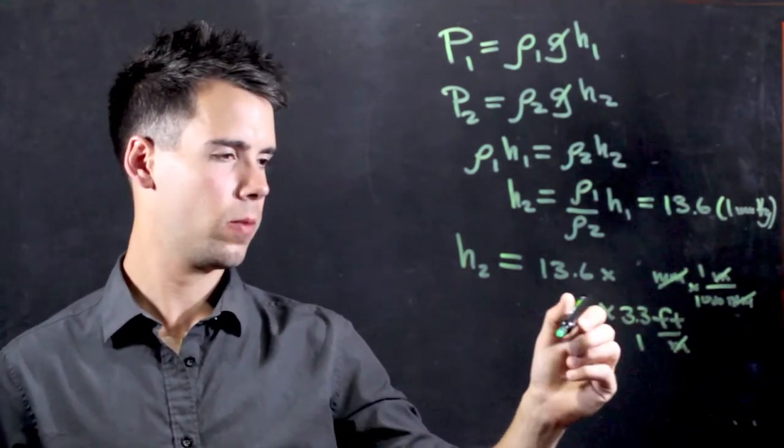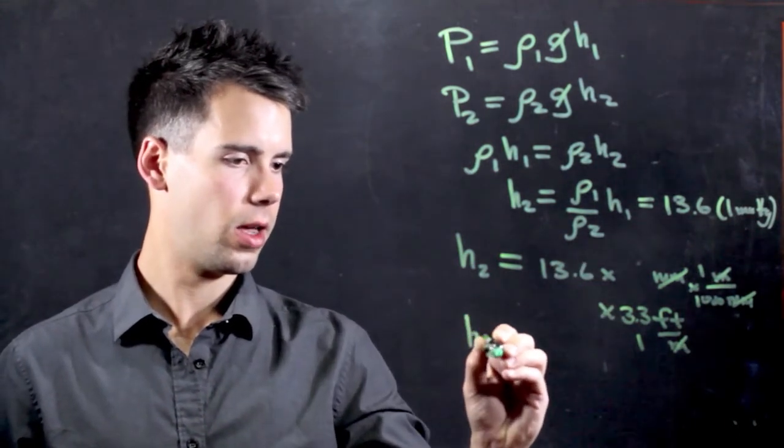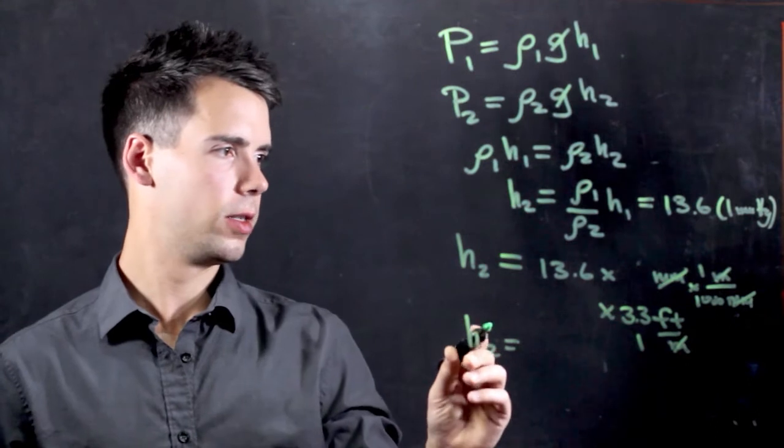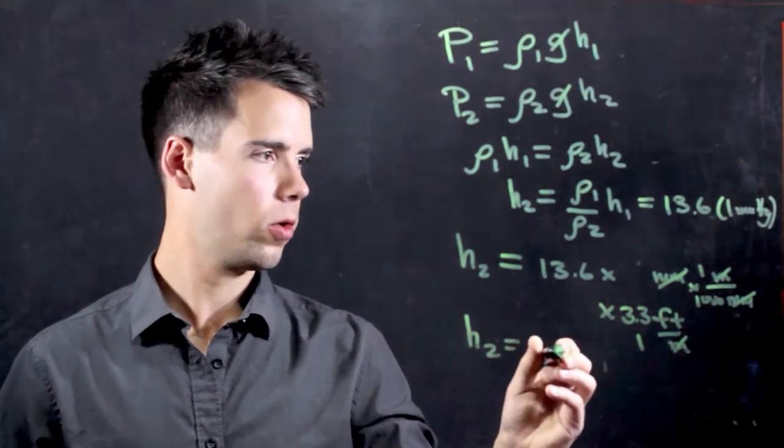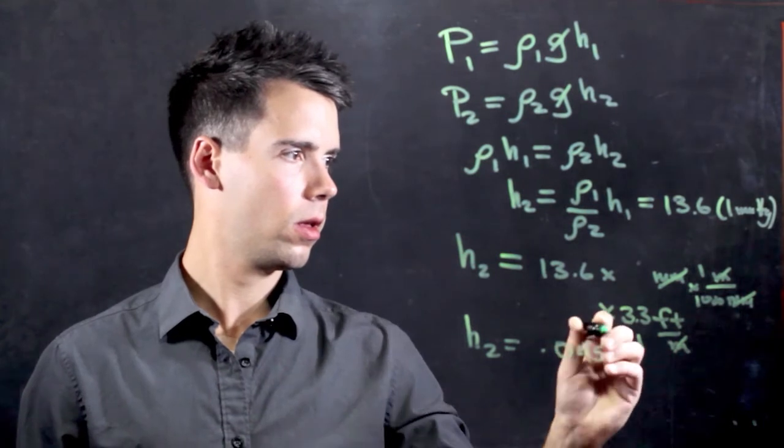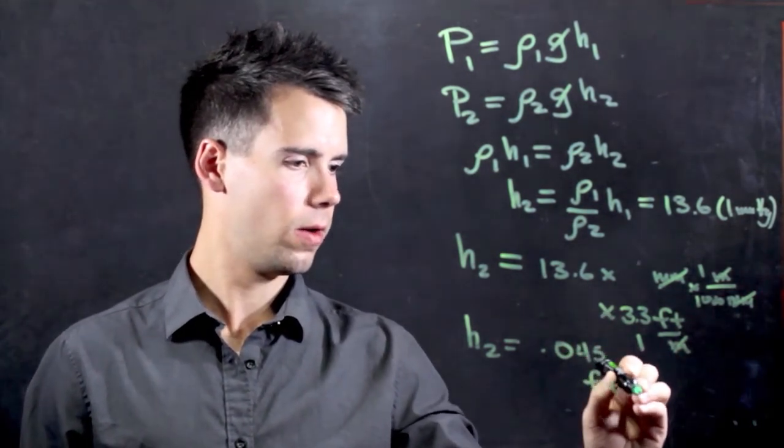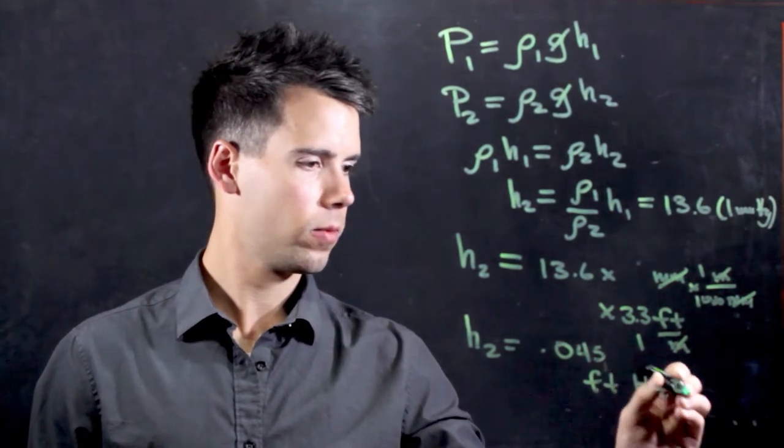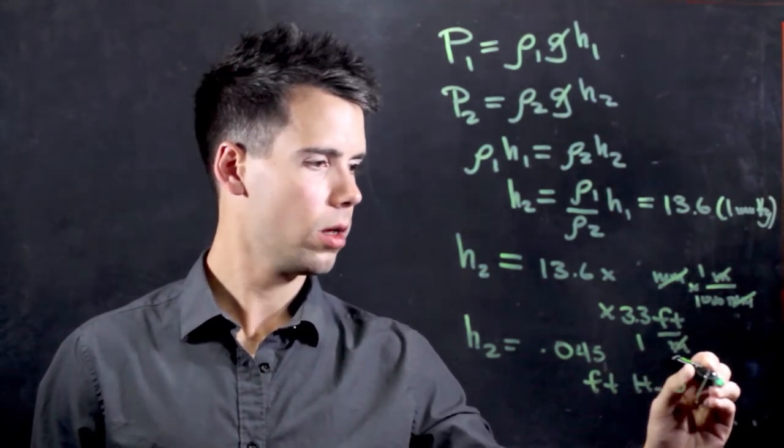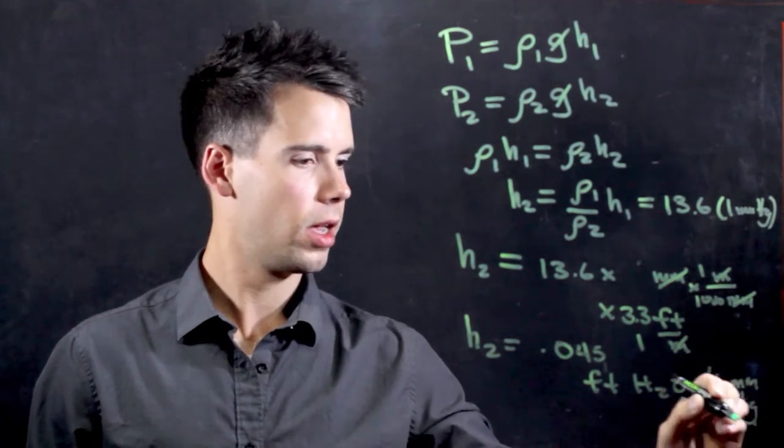Now, performing this whole calculation, we find that H2 is equal to 0.045 feet of H2O over 1 mmHg.